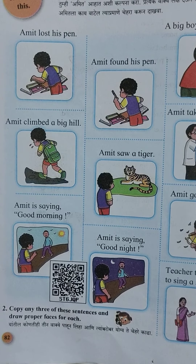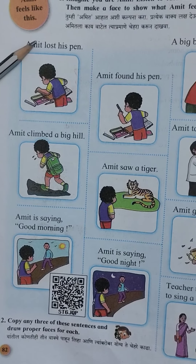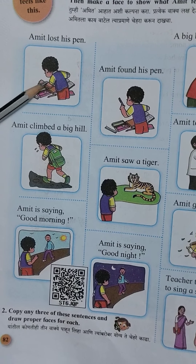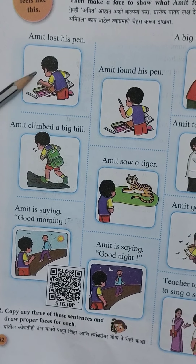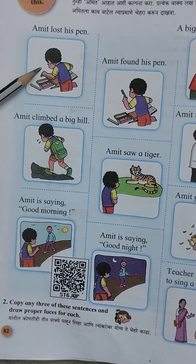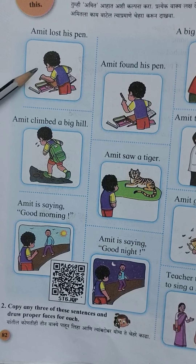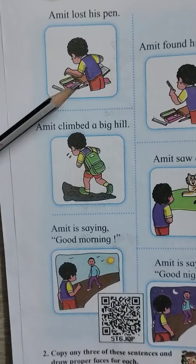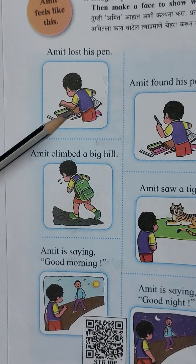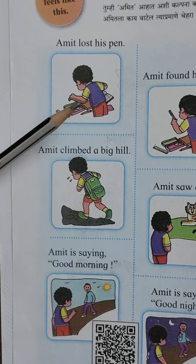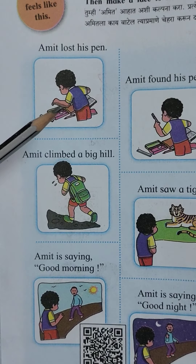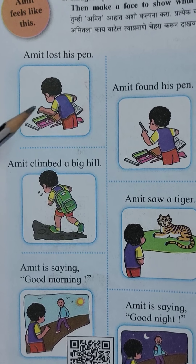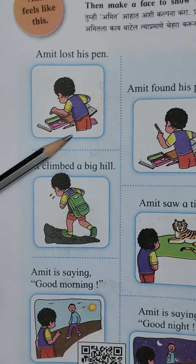See here — the first picture. Amit lost his pen. Means Amit has lost his pen. Amit teza pen haro lela hai. So if your pen was lost, what would you feel? Tumhi kasa tumcha face hoi — so make that face when your pen is lost.